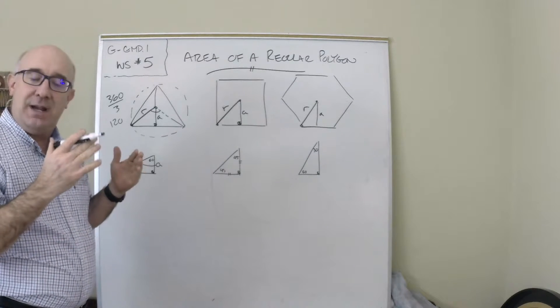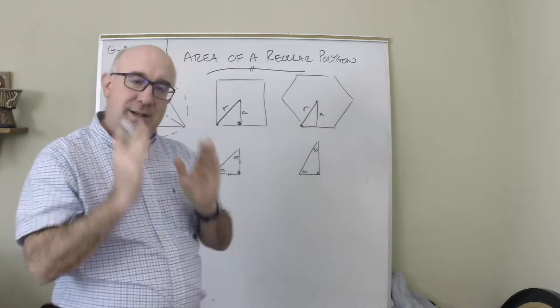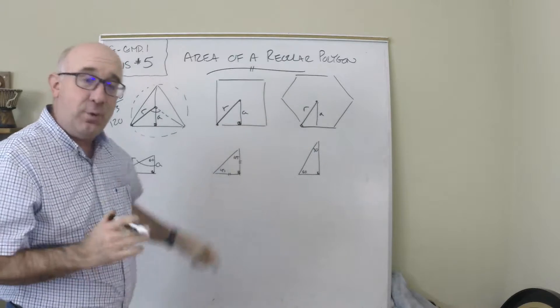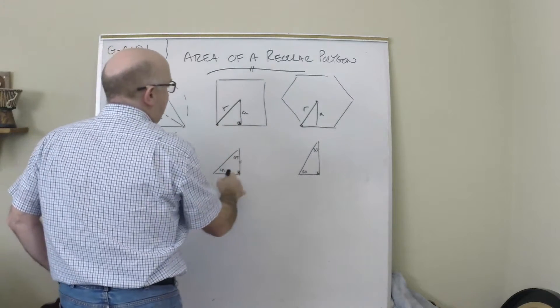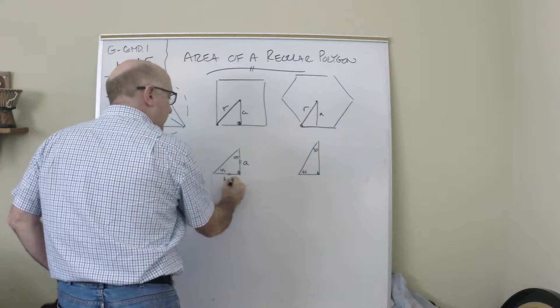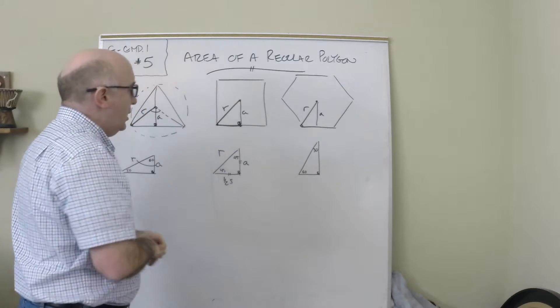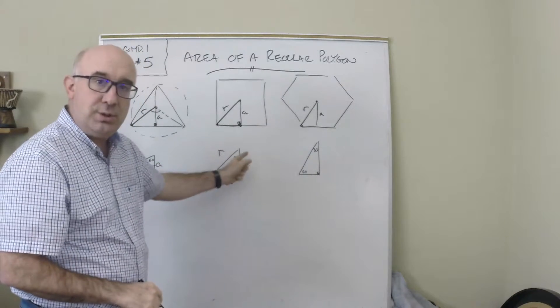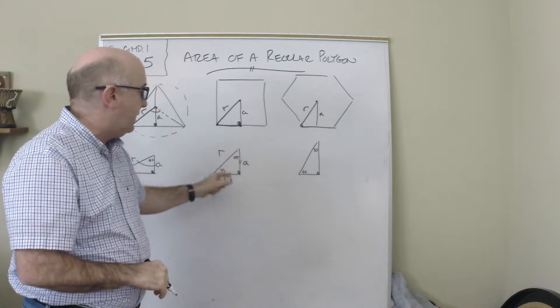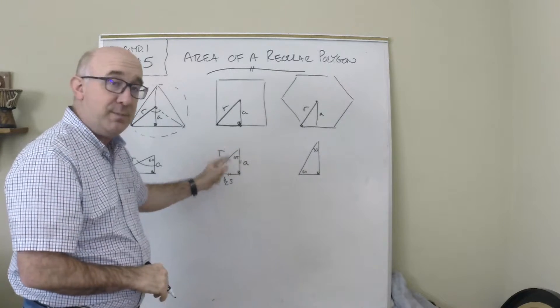In the square, when you cut it by a radius and an apothem, this is a 45-45 right triangle. Because of that, the apothem will be equal to half of the side of the square, and the radius here will be √2 times bigger than the apothem, because in a 45-45, these will always be equal and the hypotenuse is √2 times bigger.